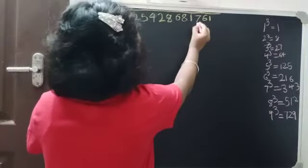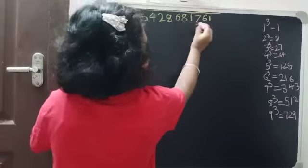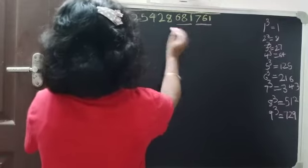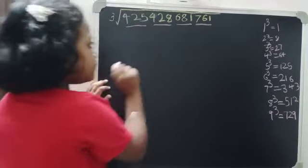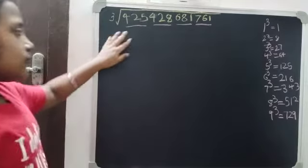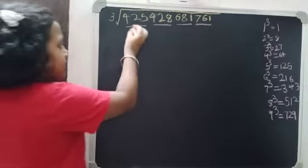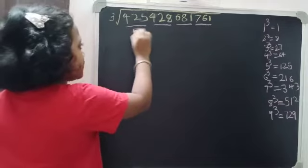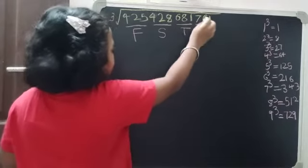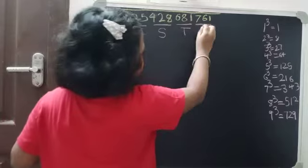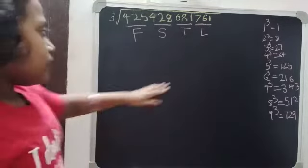Now we are dividing the sum into four pairs, and in each pair there will be three digits. We are naming the pairs: the first pair is F, the second pair is S, the third pair is T, and the last pair is L.